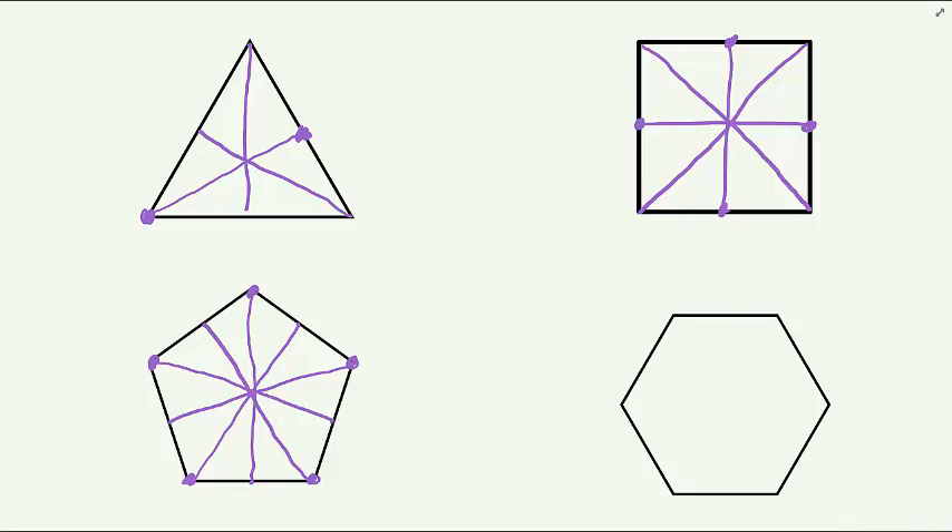These two types of lines of symmetry can also be found in hexagons. We can connect the midpoints of opposite sides and draw the diagonals.